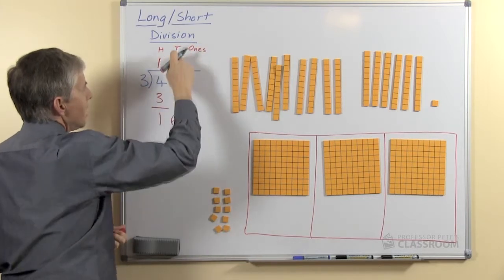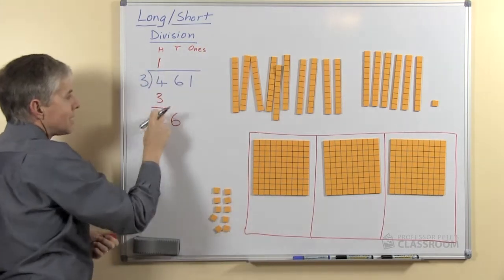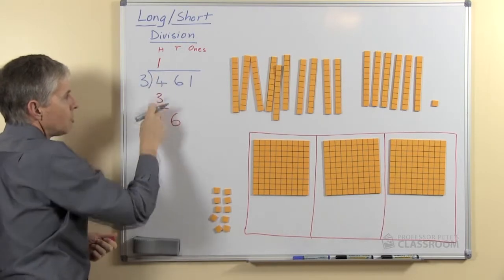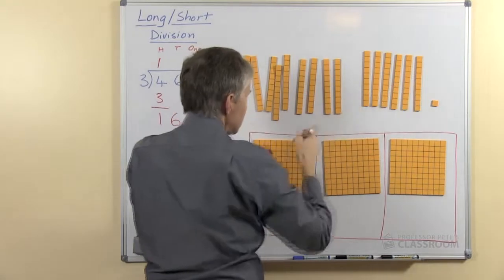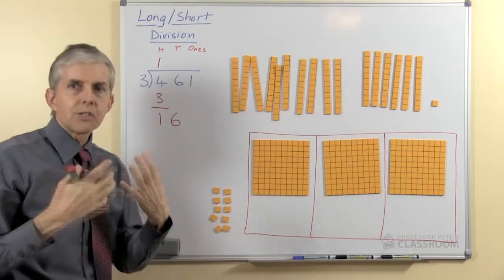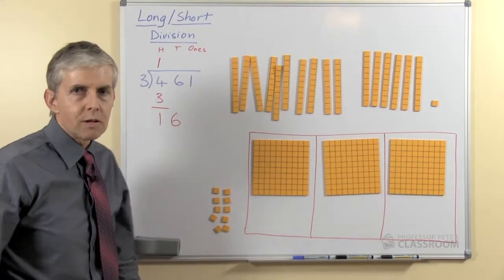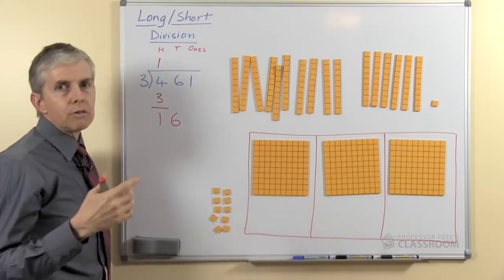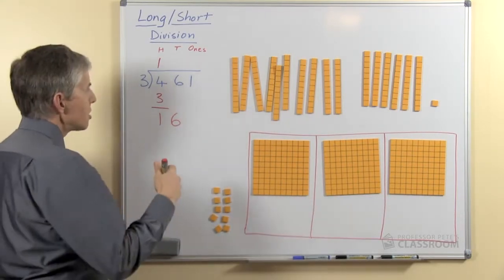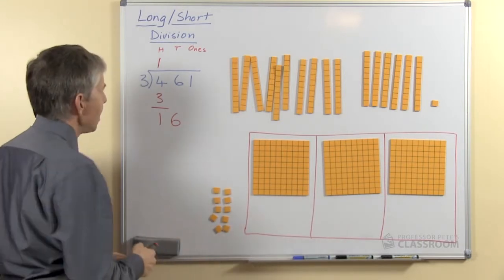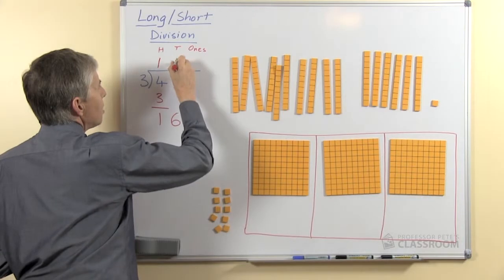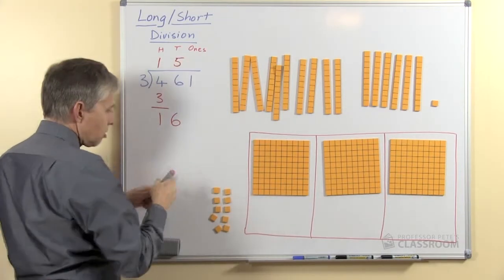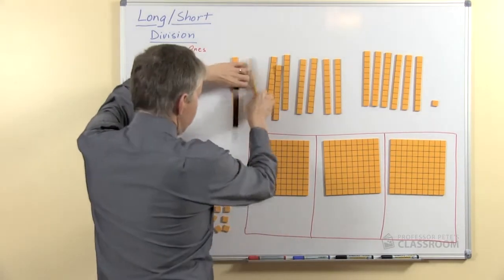So we've shared the hundreds, now we're sharing the tens and this is 10 tens left over from the hundreds column with the 6 tens makes 16 and there's our 16 tens. Can we share 16 tens among 3? Yes we can and you have to use your 3 times number facts or times tables to work out the answer. So 16 shared among 3 means everybody will have 5 because 5 threes are 15,